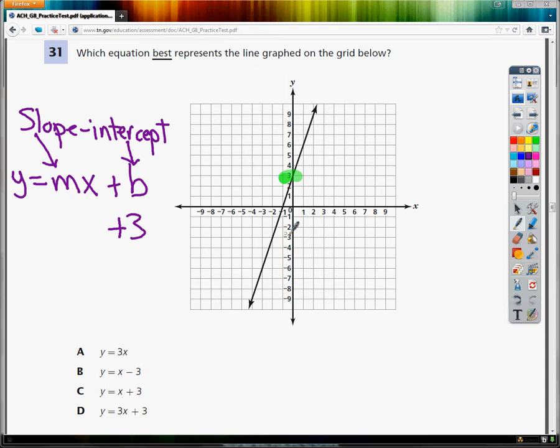If it crossed down below somewhere, like if it crossed here, I would have minus 3, but in this case it's plus. So A doesn't have anything without an x, so that's out. B says minus 3, so that's not it. So it's either C or D.